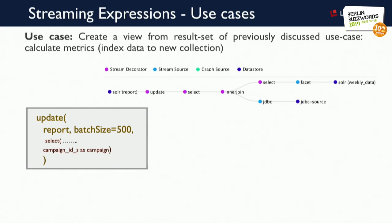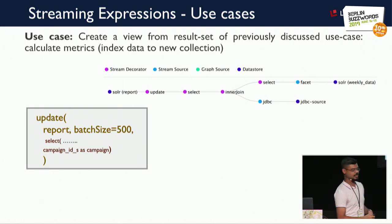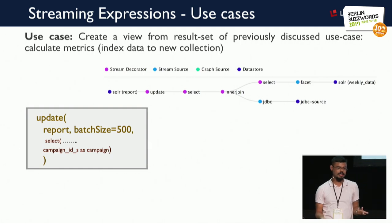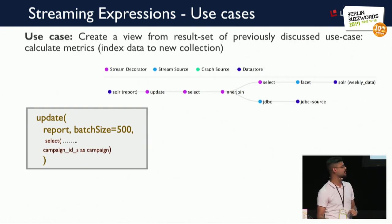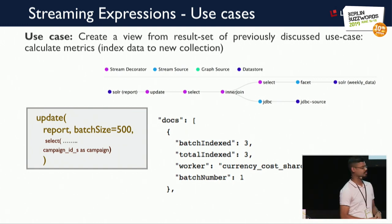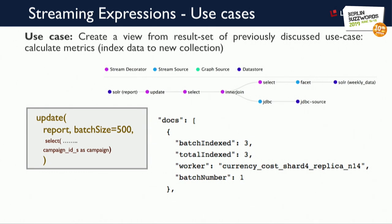Now we want to store the metrics we calculated into another collection to have a kind of report — weekly, bi-weekly, or annual. We have an update expression that wraps around our select expression and sends the crunched numbers to a collection called 'report'. The result shows total indexed: 3 — three documents indexed for campaign one, two, and three. All use cases discussed until now have been executed by a single server with no parallelization. Assuming n rows are involved, the Big O complexity of this is O(n).